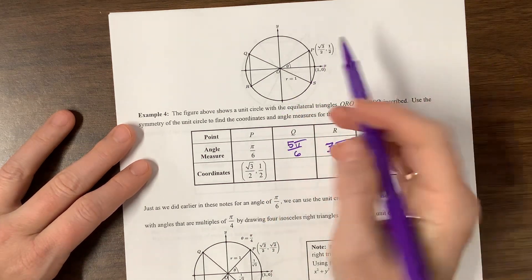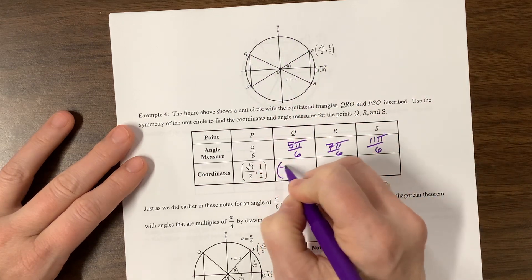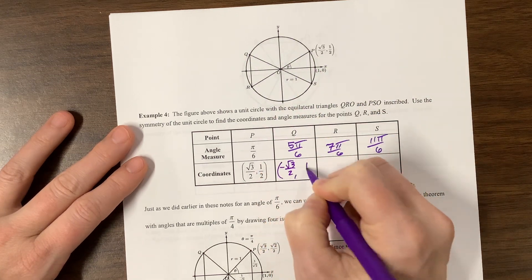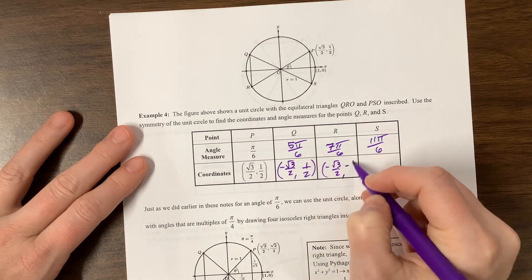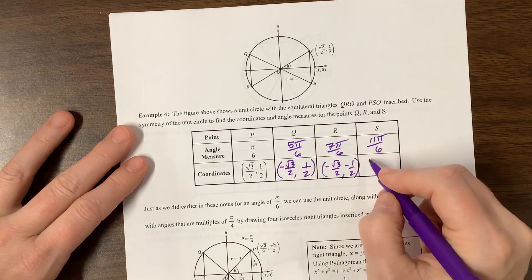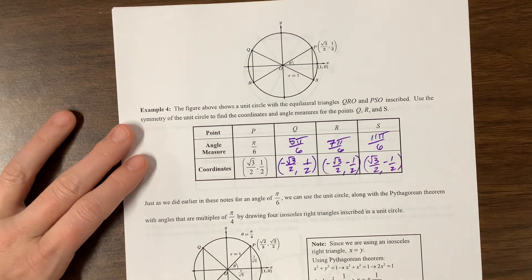We reflect, so the x value is now negative, but the y value is still positive. In this quadrant, they're both negative. And in this quadrant, the x is positive, but the y is negative.